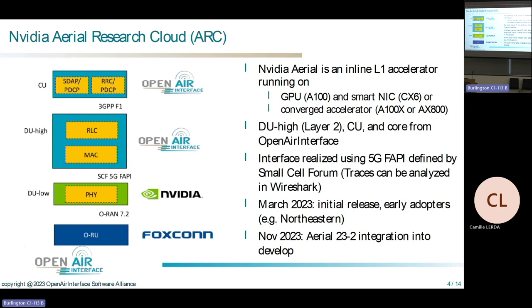The initial release was in March and there were a bunch of early adopters, including Northeastern, who deployed this system in their lab in downtown Boston. We are now about to release the second version integrating AERIAL — their version number 23.3. The public release of this branch is imminent, promised still in November, and hopefully merged by end of year to become part of the next release.